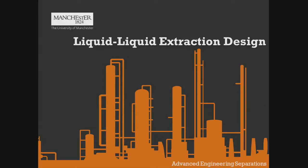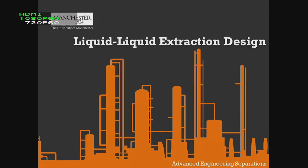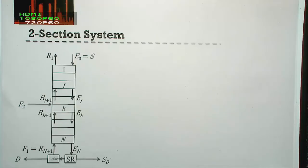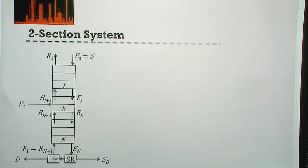So if we want to design a system more like a distillation column where we can specify the composition of both the top and the bottom product — in this case, if we want to specify both the raffinate and the extract composition — we need to look into designing a two-section liquid-liquid extraction system. In today's session, we're going to look at how we can extend the Hunter-Nash method into actually designing a two-section liquid-liquid extraction system.